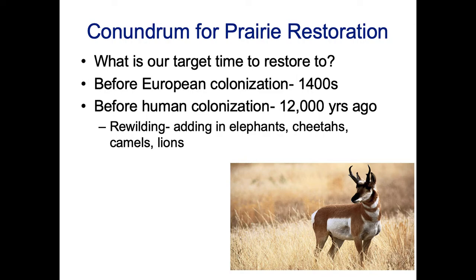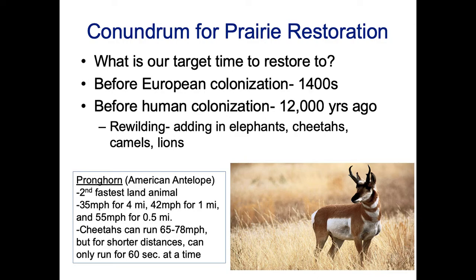There is an existing species that is kind of evidence of some of this. Some of you, especially if you're a wildlife major or minor, might recognize this species — we don't have it in Louisiana. This is the American pronghorn, or some people call it the American antelope. It's the second fastest land animal. The only thing faster than the pronghorn is the African cheetah. It can go 35 miles per hour for four miles and hit speeds of 55 miles per hour for half a mile.